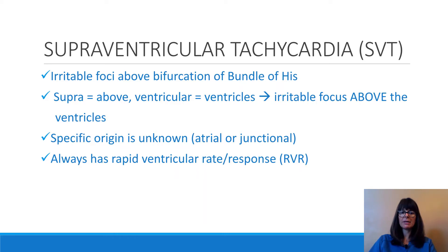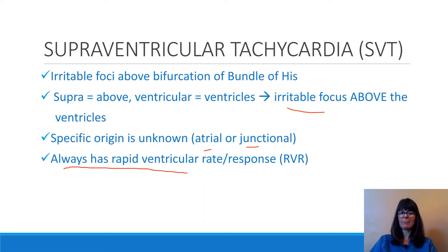Supraventricular tachycardia basically means that we have an irritable focus above the bifurcation of the bundle of His. If you need to go back and review the conduction system of the heart, this would be a perfect time to do that. 'Supra' meaning above and 'ventricular' meaning the ventricles — so this irritable focus stems from somewhere above the ventricles. This can be the SA node, atrial, or junctional — somewhere from the AV junction. And it always has a rapid ventricular response, which means that the heart rate is usually greater than 150.